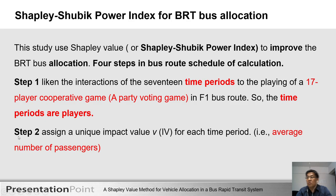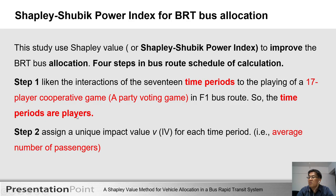To optimize PTS performance, researchers have evolved the Shapley value and optimization methods over the past few decades. This study applies the Shapley value and Shapley-Shubik power index to improve the BRT bus allocation. There are four steps in the BRT schedule calculation.